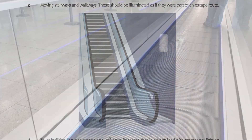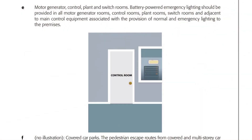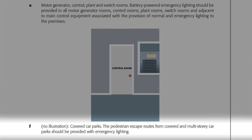Emergency lighting is also required on escalators and moving walkways, in toilets with gross floor areas over eight metres squared, and the guide specifies that battery-powered emergency lighting should be provided in all motor generator rooms, control rooms, plant rooms, switch rooms, and adjacent to main control equipment associated with normal and emergency lighting. It makes the point these should be battery-powered — not supplied by a backup generator — since if a generator failed, it would also cut the lights in the room the generator was in. Finally, pedestrian escape routes from covered and multi-storey car parks should also be provided with emergency lighting.